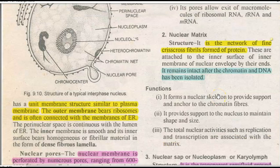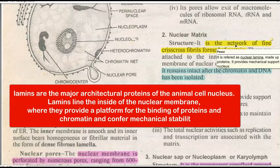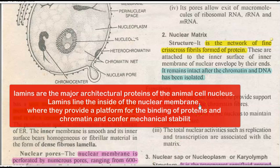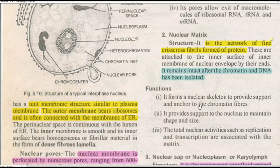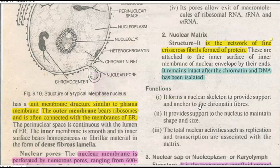The next structure is the nuclear matrix — a network of fine crisscross fibrils formed of protein, sometimes referred to as the nuclear lamina, as it is made up of a protein called lamin, which provides strength to the nucleus. It remains intact even after the chromatin and DNA have been removed from the nucleus. Functions of the nuclear matrix include forming a nuclear skeleton — a nucleoskeleton made up of lamin protein — that provides support and anchorage to the chromatin fibers, maintains the shape and size of the nucleus, and is associated with replication and transcription activities.